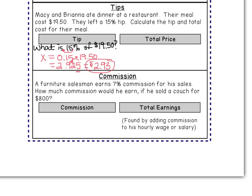Since I left a $2.93 tip, I need to figure out my total bill. One last step: take my $19.50 and add the tip of $2.93, giving a new total of $22.43.